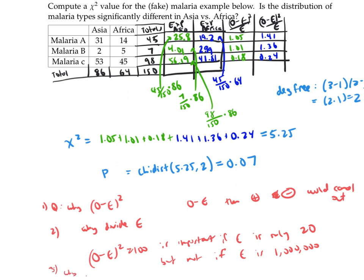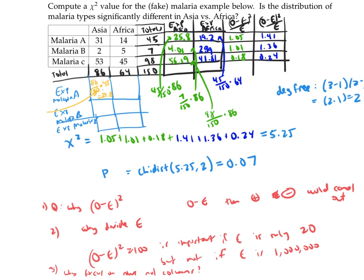The third question I have is, why focus on rows, not columns? Well, we could focus on columns, in fact. Instead of focusing on Asia and Africa and doing these expected counts here, we could focus on malaria A and malaria B and malaria C and do expected numbers of malaria A in Asia and Africa, B in Asia and Africa, C in Asia and Africa. We'd actually get the same numbers. Because if we wanted to do expected counts for malaria A in Asia and build our table down this way, to compute this number here, we'd say, okay, how much malaria A would you expect in Asia? Well, the Asian fraction of cases is 86 out of 150. And we multiply that by the total malaria cases of 45. And that would give us the same number of 25.8 as before, because it's actually the very same arithmetic computation.